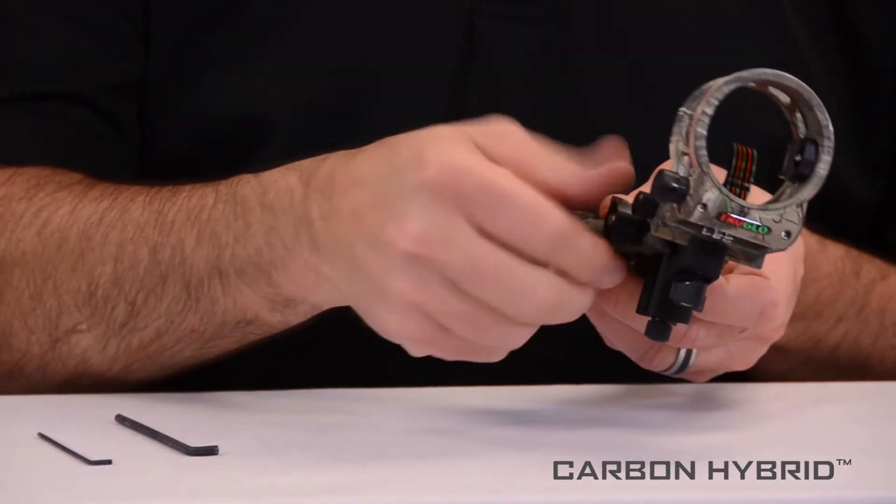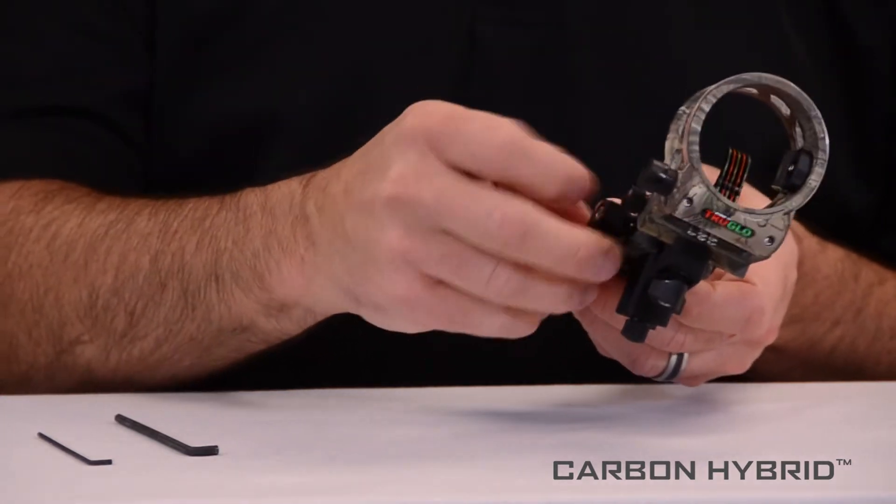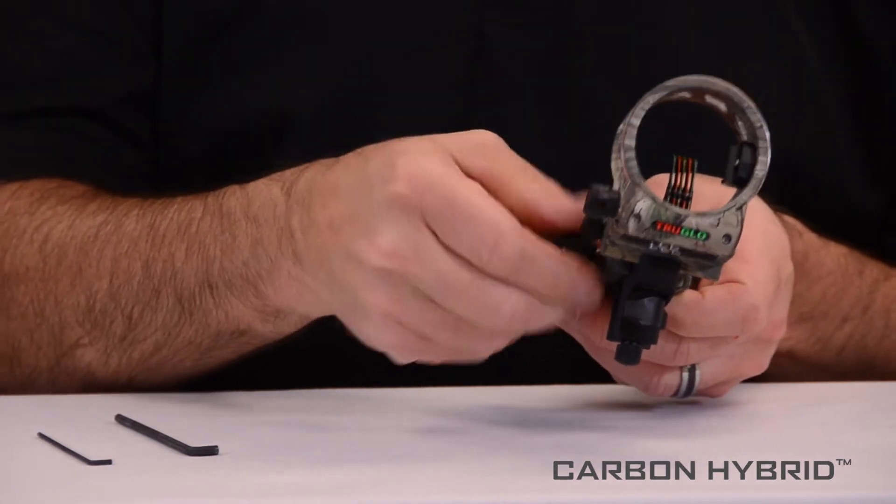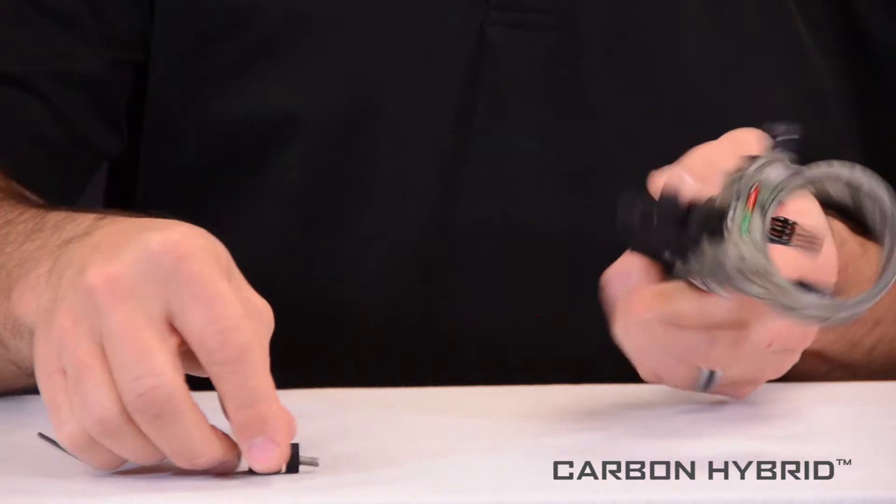First, start by removing the tool-less knob. The spacer should come out with it at the same time.